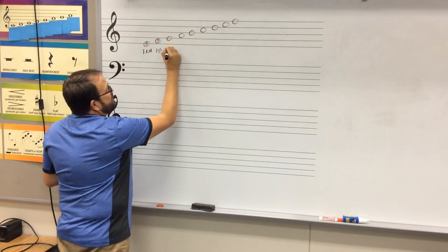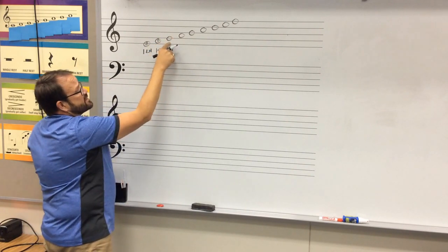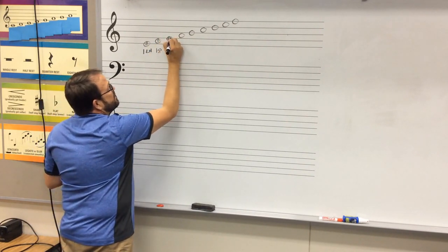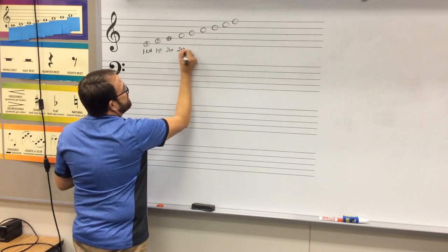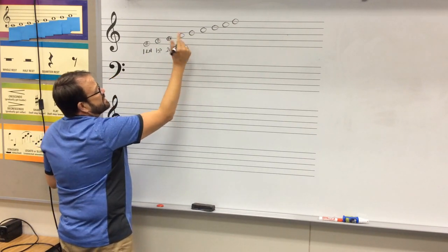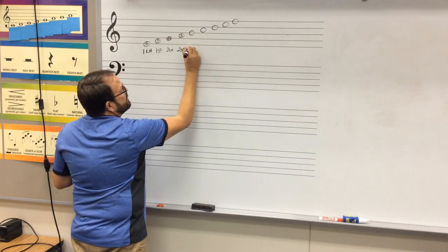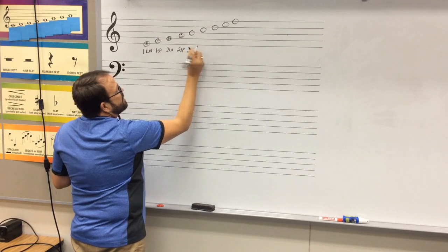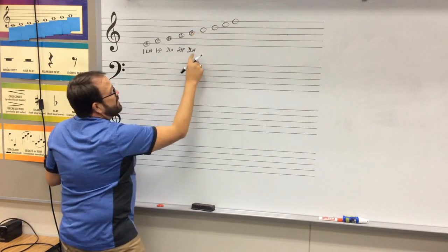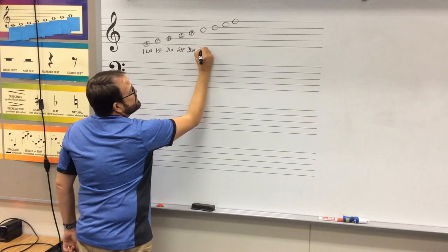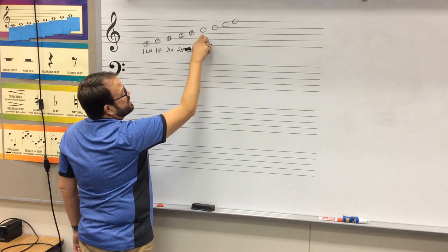Then we have second line, which would be after F is G. Then we have second space, after G is A. Then we have third line, after A is B.